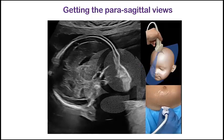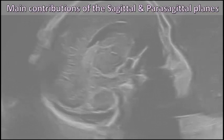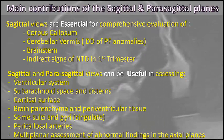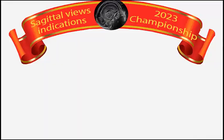And once you are in the mid-sagittal plane, you only have to tilt the transducer from one side to the other to get the parasagittal views. These are, in my opinion, the main contributions of the sagittal and parasagittal planes. They are essential for the evaluation of some brain structures and can also be very useful in the assessment of some other aspects.